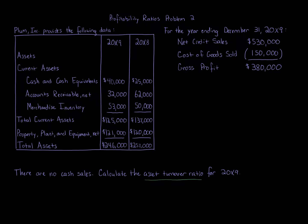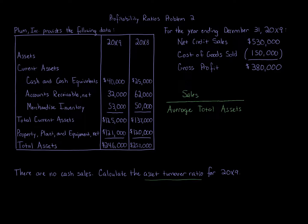The asset turnover ratio measures how effectively a company uses its assets. The formula is sales over average total assets. The purpose of a for-profit business is to generate income, and it has to use assets to generate that income. We want higher income and lower expenses to generate more profit — that is our goal.